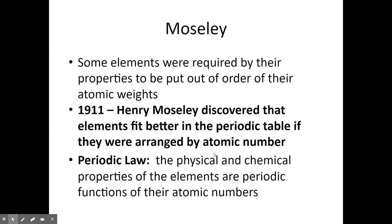Mendeleev's table was working well, but there were two unanswered questions: why could most elements be arranged by atomic mass but not all of them, and what was the reason for chemical periodicity — why did we see this repeating pattern? It wasn't until 1911 when Henry Moseley discovered that rearranging the table based on atomic number, which is the number of protons, suddenly solved both questions. Everything fit exactly where it was supposed to go and the pattern of periodicity was absolute. The reason Moseley figured this out and Mendeleev didn't was simply that protons hadn't been discovered yet.